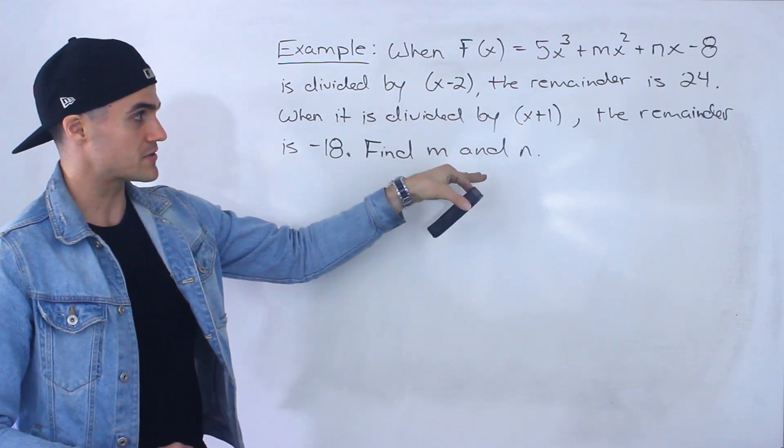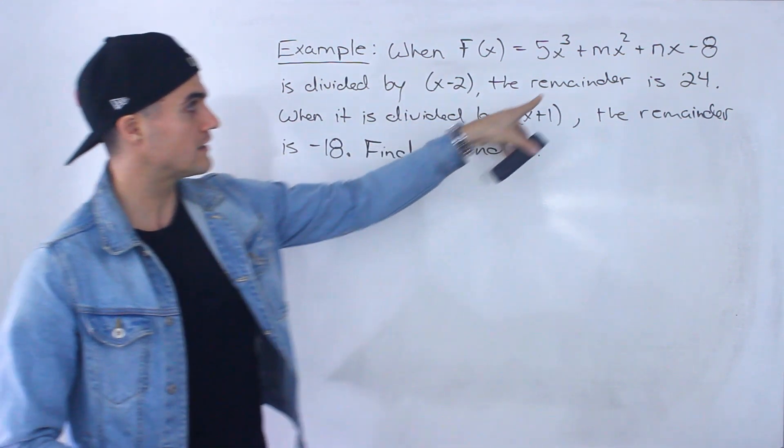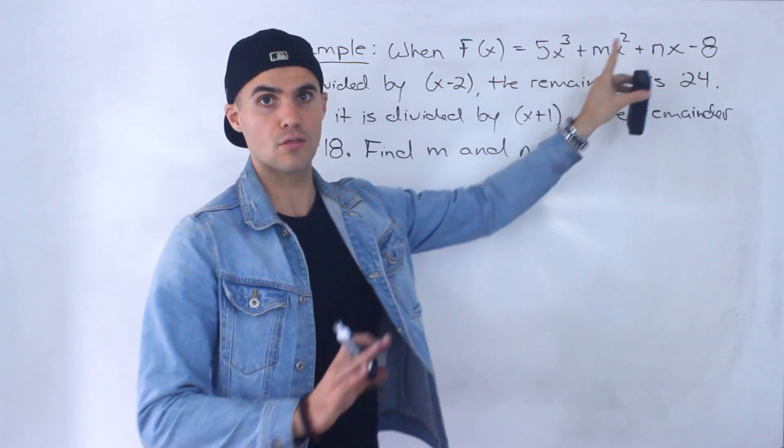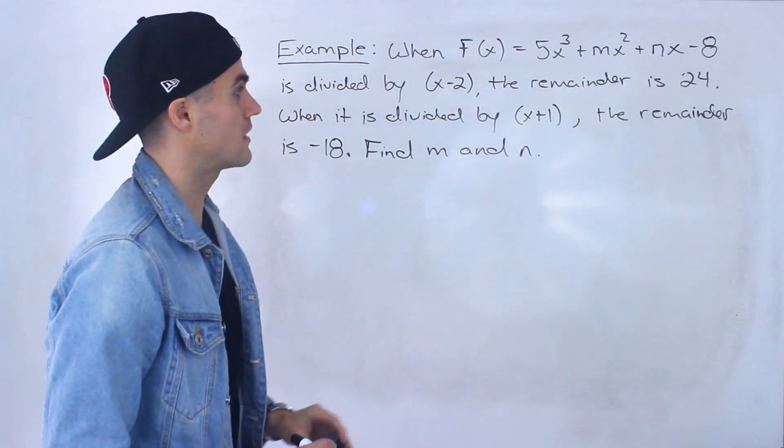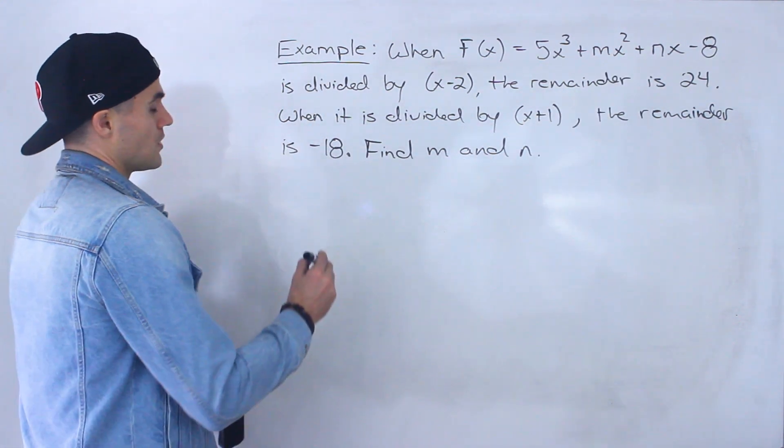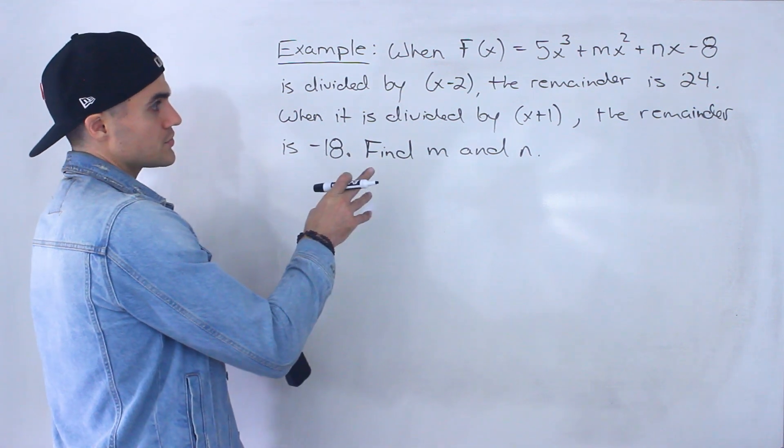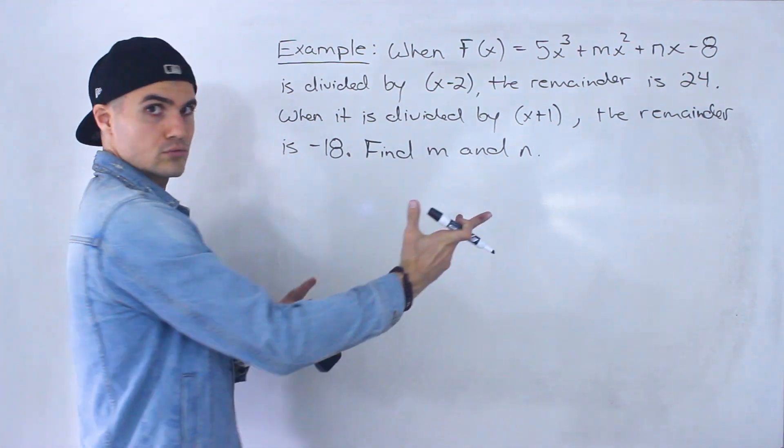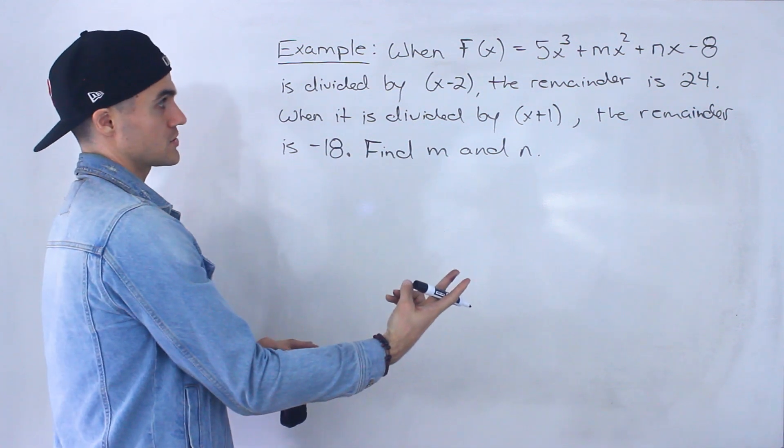When it's divided by x + 1, the remainder is negative 18. And we got to find this m and that n, those coefficients right there. And so what we got to do, since we're finding two unknowns, we need two equations.